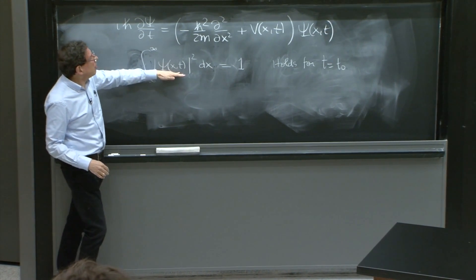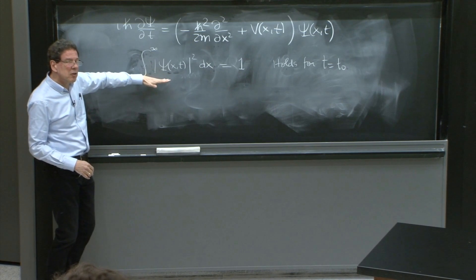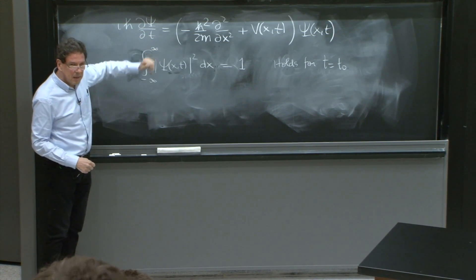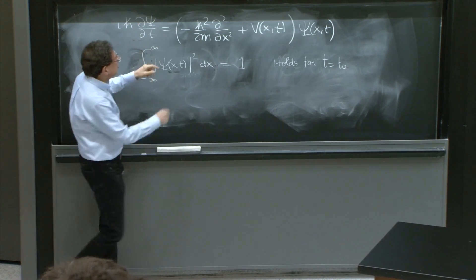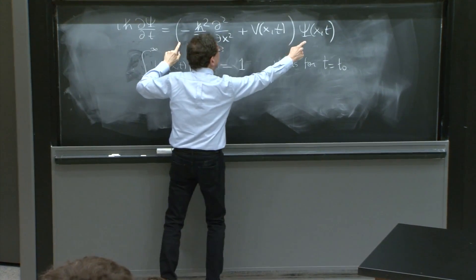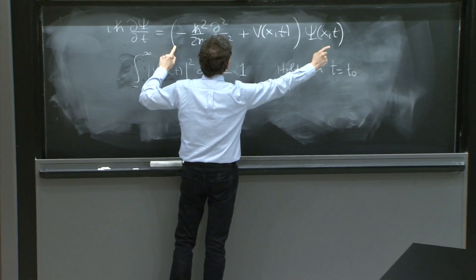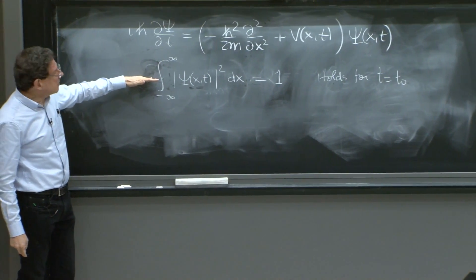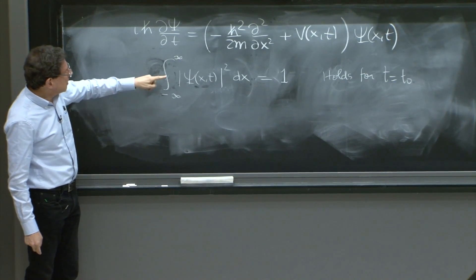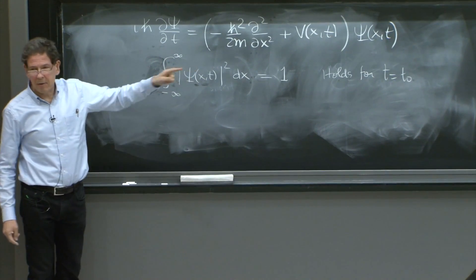But if you know psi of x and t0 for all x, then the Schrodinger equation tells you what the wave function is at a later time, because it gives you the time derivative of the wave function in terms of data about the wave function all over space. So automatically, the Schrodinger equation must make it true that this will hold at later times.